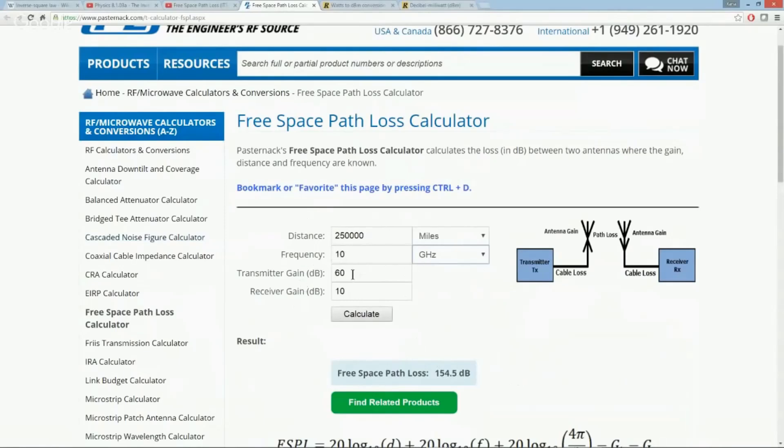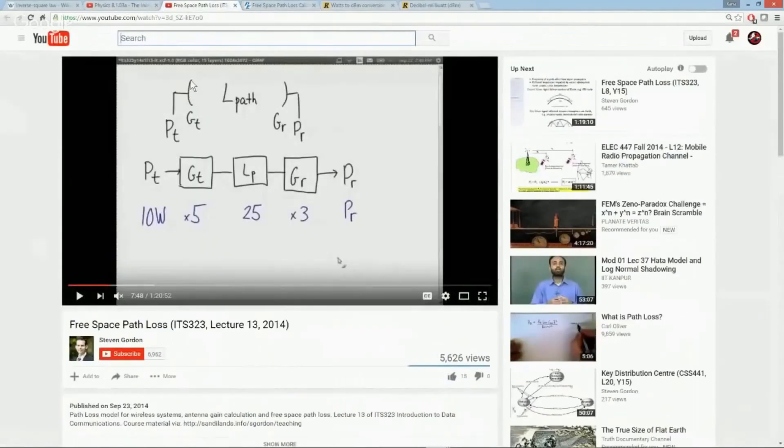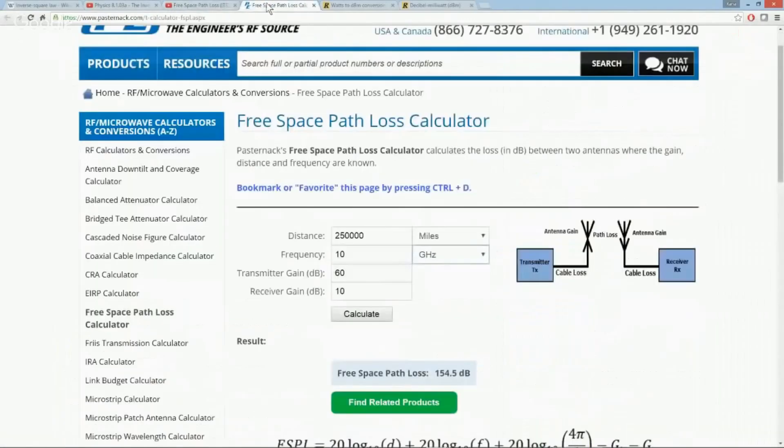Then you have this transmitter gain in dB. Essentially what this is talking about is, going back to this diagram, coming off the antenna is your effective radiated power. That's taking into consideration the power coming from the final amplifier of the transmitter, going through whatever losses there are—cable loss, but we're not going to talk about that—and then finally getting to the antenna which gives it another additional gain factor, which then gives you what is called an effective radiated power.